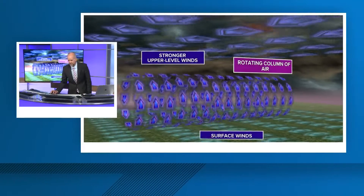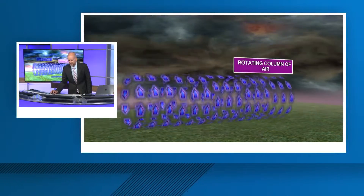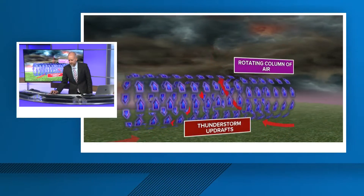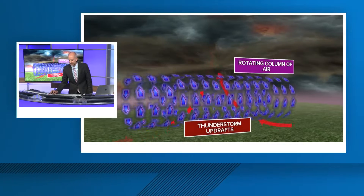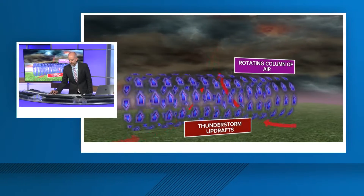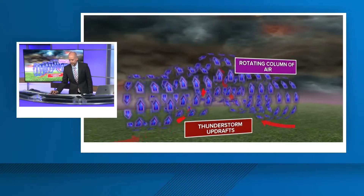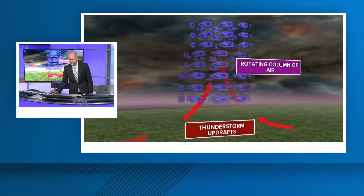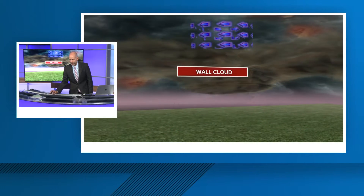When we get strong updrafts — and that's why the updraft is so important in those lightning jumps, because it tells me the strong updraft is developing — it takes those horizontal rolls and tilts them on their side, and you get rotation.